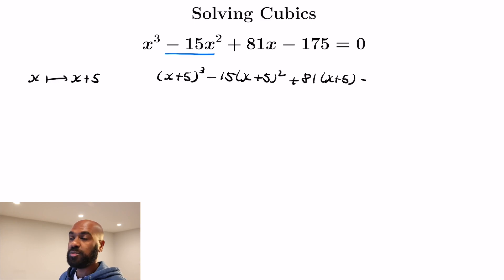We'll have x plus 5 cubed and then a minus 15 times x plus 5 squared and then some other terms. If we look at the first term here, x plus 5 all cubed, the coefficient of x squared there will be three times the constant coefficient 5, which gives us a 15 in total.